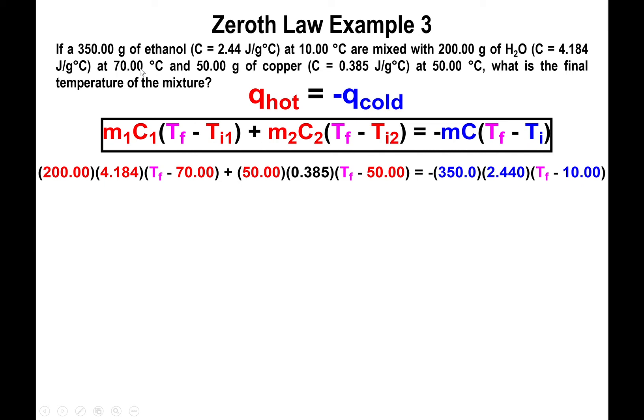All right, that takes care of water. Now copper: copper we have 50 grams worth of mass, a heat capacity of 0.385, and a final temperature that we don't know but we know that ought to be the same as the other final temperature that we have in the first q term, minus the initial temperature of the copper, and that is the 50 degrees Celsius. Okay, so that takes care of q_hot.